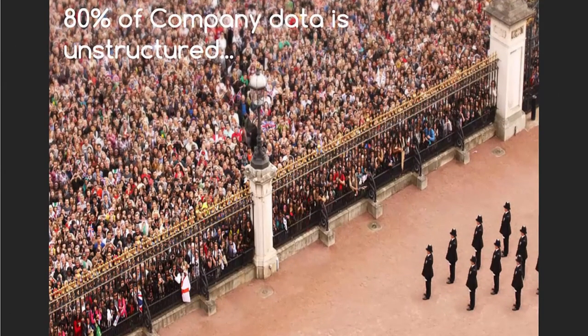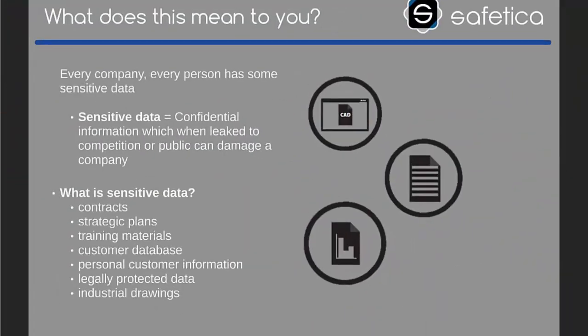You may think your data is secured in certain locations on your network, but on average 80% of company data is unstructured. So employees have access to a lot of information that could hurt you if it leaves your company. Sensitive documents could be confidential information that could help a competitor, contracts, customer sales lists, or legally protected data — all kinds of information within your company that can harm you if it leaves the organization.